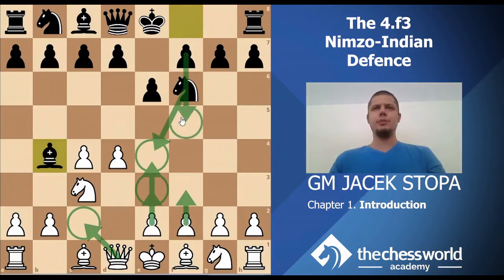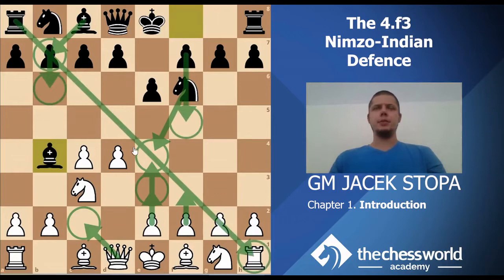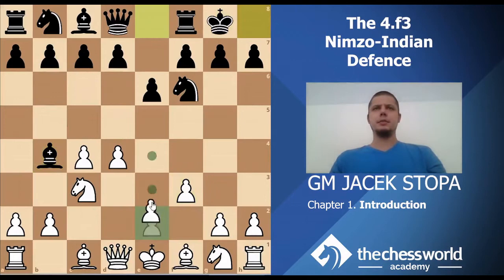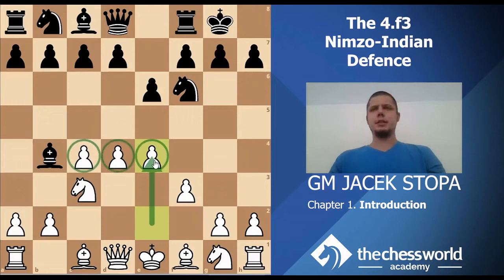Well, in some of the lines, Black wants to bring the knight over to e4 and maybe follow it up with f5, b6, bishop b7, focusing on that diagonal. So it's in White's best interest to not allow that. Another idea is to be in total control of the center — f3 allows e4. So if castles, there is e4.